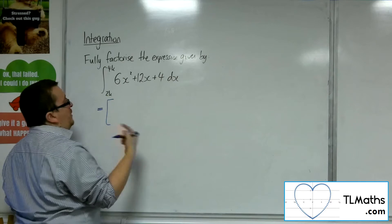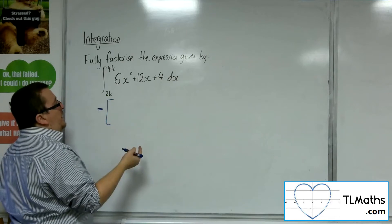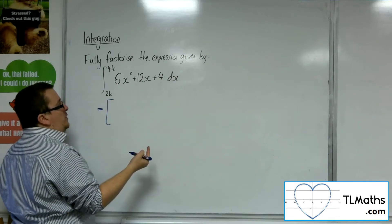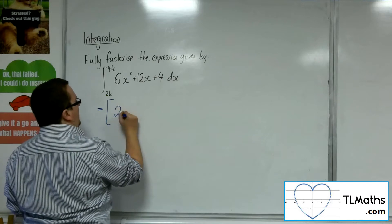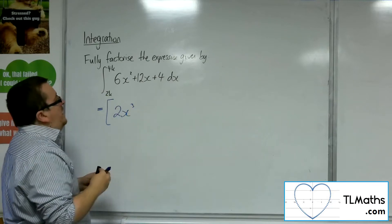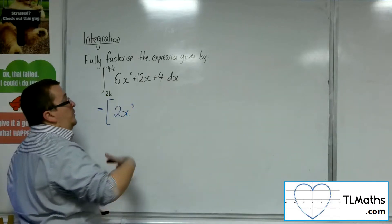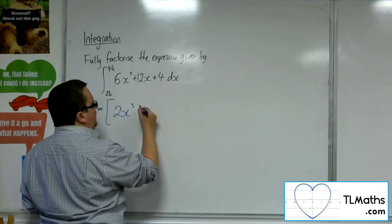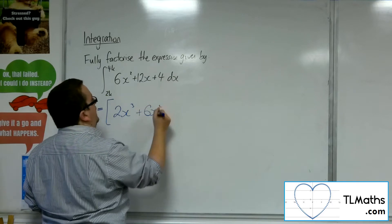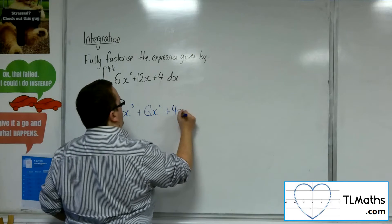So I'm going to add 1 to the power, divide by the new power. So 6x squared, add 1 to the power gives 6x cubed, divide by 3, so I get 2x cubed. Then 12x integrates to 12x squared over 2, so 6x squared. And the 4 integrates to 4x.